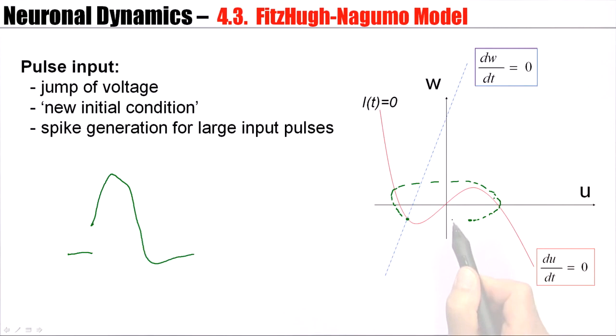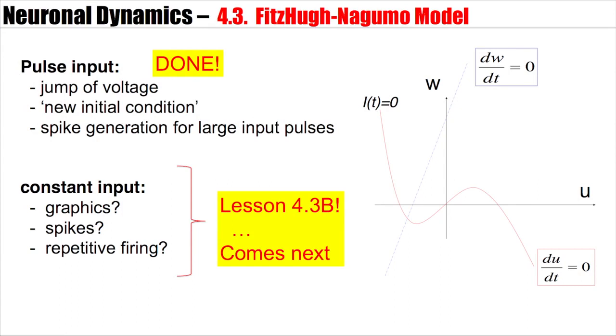If I make the current pulse smaller, I jump to a different value, and the trajectory will look different. If I jump to a much smaller value, I don't have an excursion at all, but it returns immediately to the resting value. Spike generation will occur for large input pulses. So far pulse input. We'll see you next time.